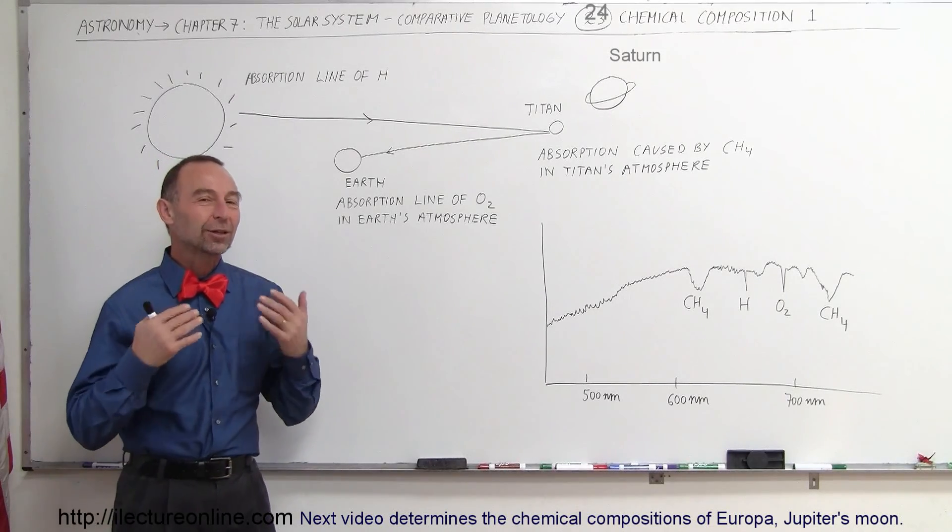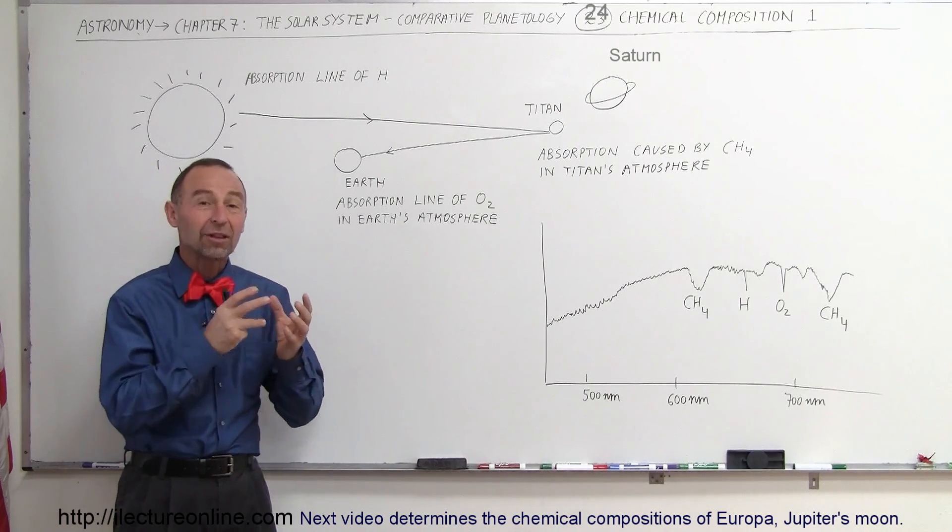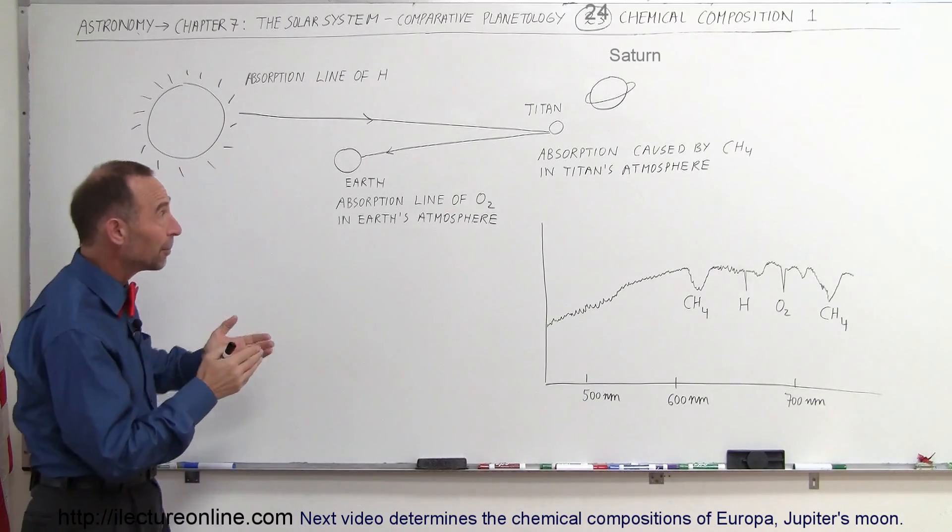Welcome to Electronline, and now we're going to take a look and see how we discover what atmospheres and planets and moons are made out of by studying the spectrum of the light coming back from those objects. For example, Titan.